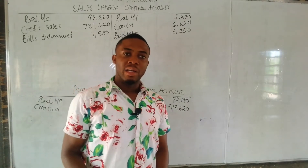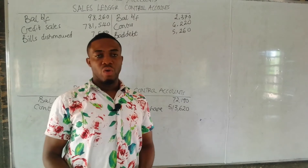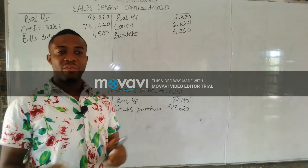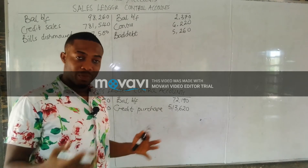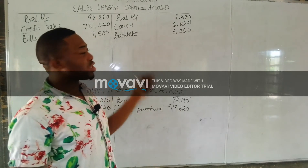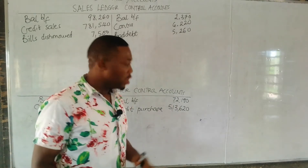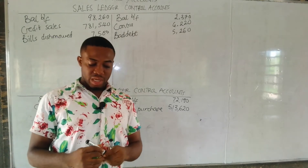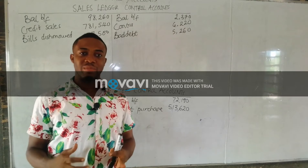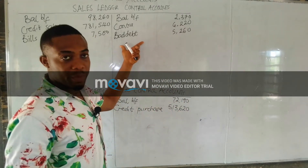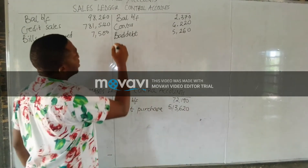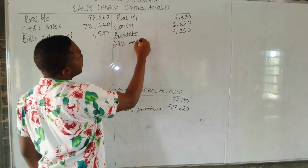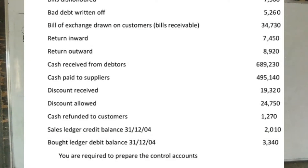Next is bill of exchange drawn on customer, also known as bills receivable. If it is drawn on a supplier it is a bill payable; if drawn on a customer it is a bill receivable. Since the customer has signed acknowledging their debt and promise to pay, the bills receivable reduces the debtor's balance and is posted to the credit side of the sales ledger at $24,730.